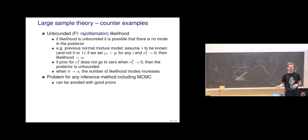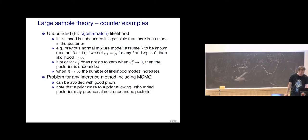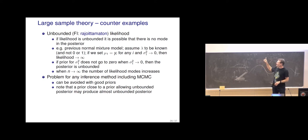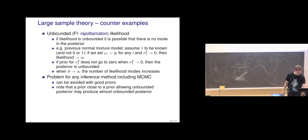In the mixture modeling literature there's too much discussion trying to identify the number of components and make conclusions based on that. It's complicated. Back to the unbounded case: if we have a prior that is close to allowing unbounded posterior, we may get an almost unbounded posterior, which can be computationally very difficult.